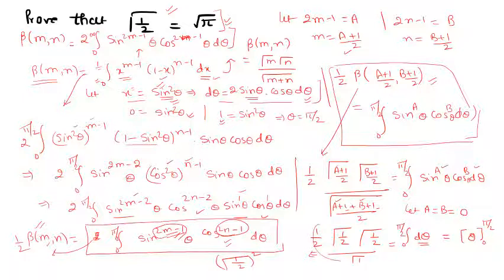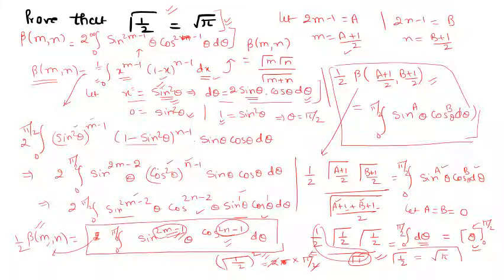On the right-hand side with a=0, b=0: sin⁰θ=1 and cos⁰θ=1, so only dθ remains. The integral of dθ from 0 to π/2 equals π/2. So we have (1/2)·[Γ(1/2)]² = π/2, which gives [Γ(1/2)]² = π, and therefore Γ(1/2) = √π.